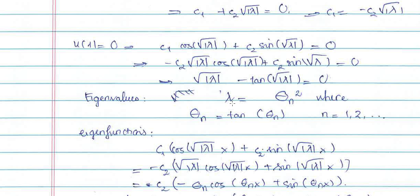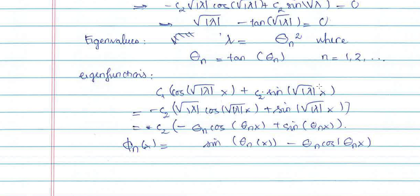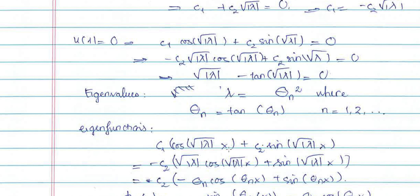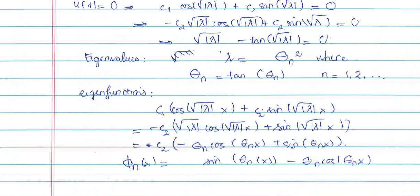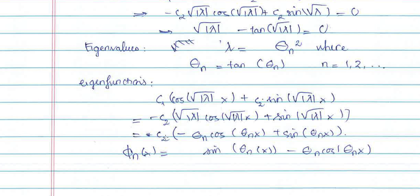The eigenvalues are lambda_n = theta_n squared, where theta_n solves the equation tan(theta_n) = theta_n, for n = 1, 2, 3, 4, 5, ... The corresponding eigenfunction is c1*cos(sqrt(lambda)*x) + c2*sin(sqrt(lambda)*x). Substituting c1 = -c2*theta_n and letting theta_n = sqrt(lambda), the eigenfunction becomes c2*(-theta_n*cos(theta_n*x) + sin(theta_n*x)). Removing the constant c2, the eigenfunction is sin(theta_n*x) - theta_n*cos(theta_n*x).